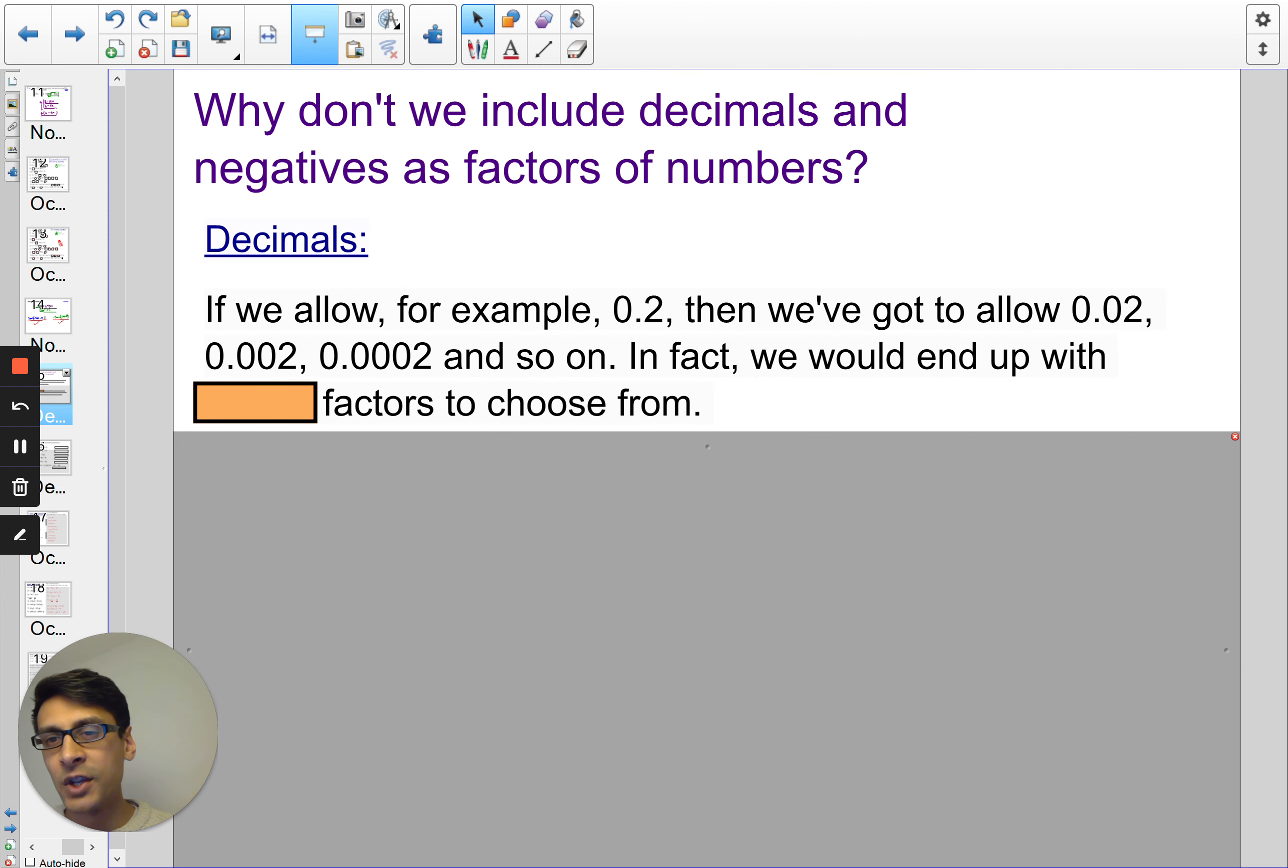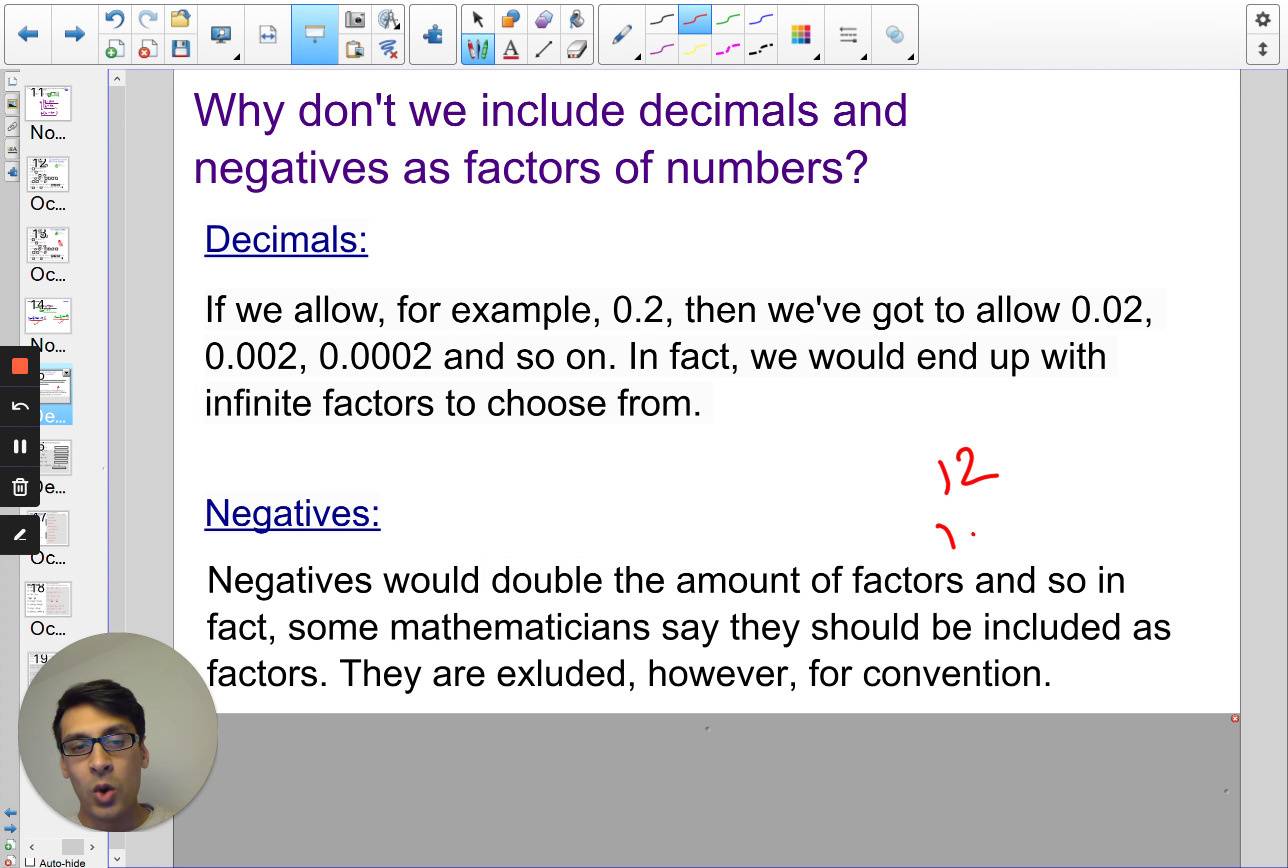So, for example, when we did numbers like 12, we know that numbers like 1, 2, 3, 4, 6, 12, they all go into 12. Well, we could also say negative 3, negative 4. So all of these numbers, if they were negative, would also go. So just by convention, so it's just what we've decided, we don't include negative numbers generally when we are factorising.